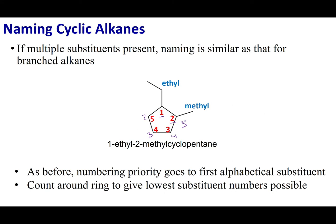So, since two is lower than five, I'm going to number this clockwise. Once you do that, you follow the same rules. Alphabetical order with all your substituents, and then make sure you have numbered it correctly. Again, the parent molecule is the cyclic compound.